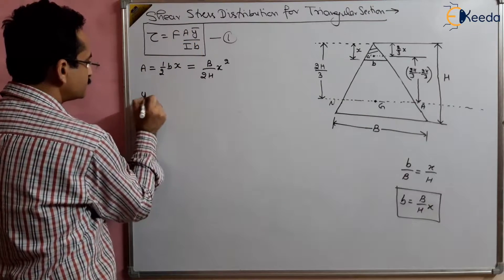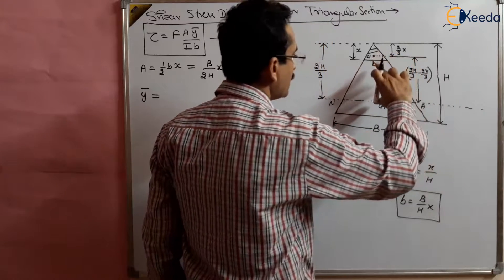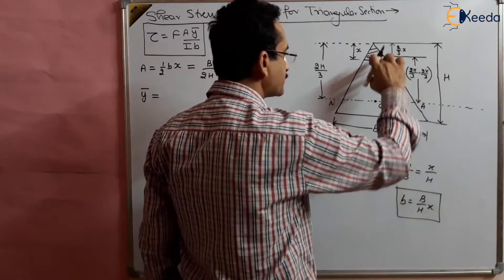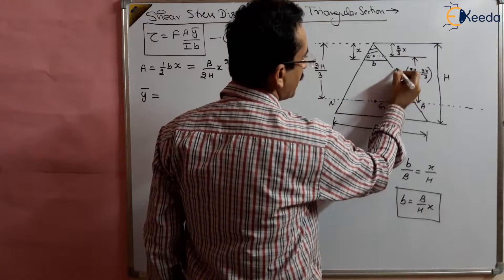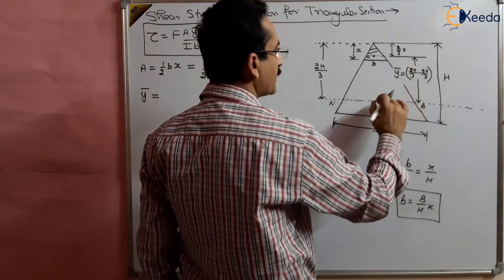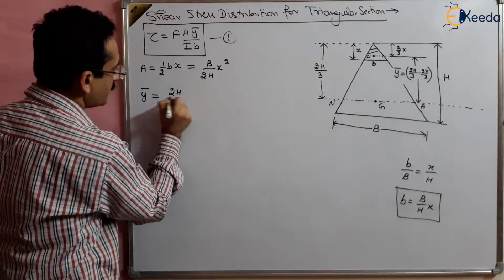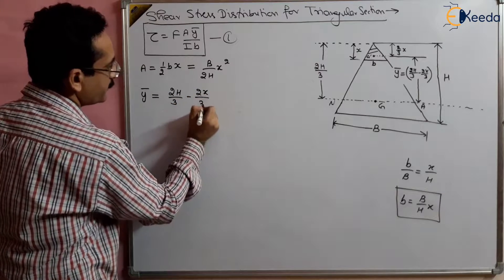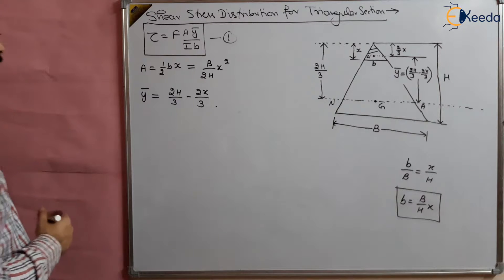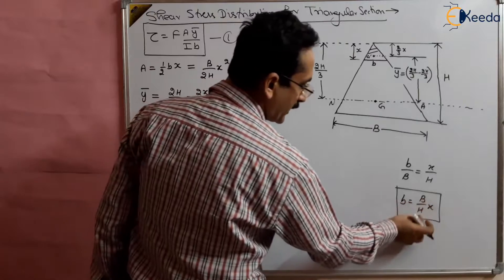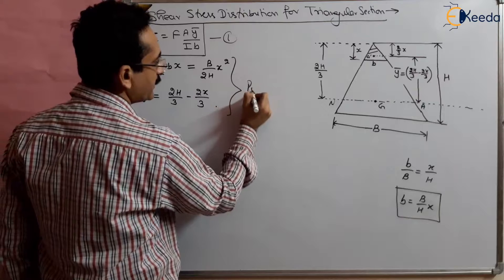Now for ȳ: ȳ is the distance between the two centroids G and G'. We established that ȳ equals 2H/3 minus 2x/3. And small b is already known as (B/H) × x. So we now have all the terms needed to substitute into the shear stress formula.